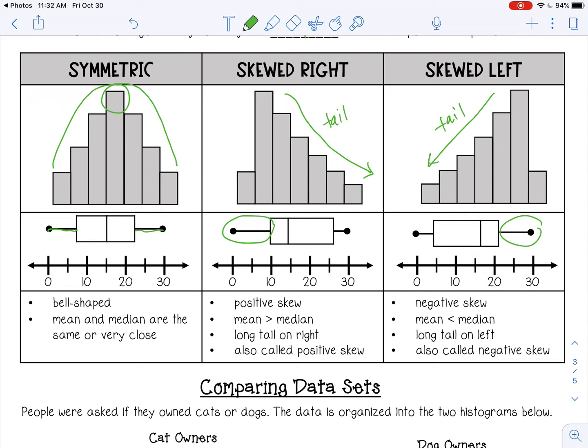And all this means for skewed right, that means the numbers are mostly over here. You're going to have a higher peak on this side. And then for skewed left, you're going to have a higher peak over here on the right. So it's kind of backwards from what you would think. Skewed right, there's a higher peak on the left. And then skewed left, there's a higher peak on the right.